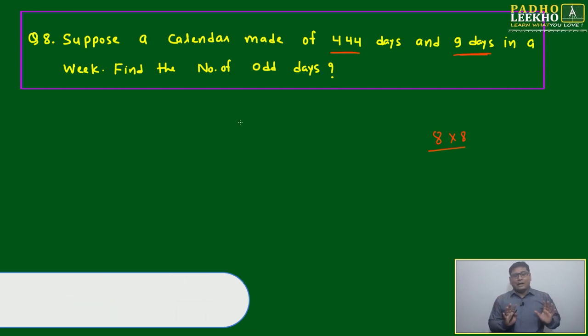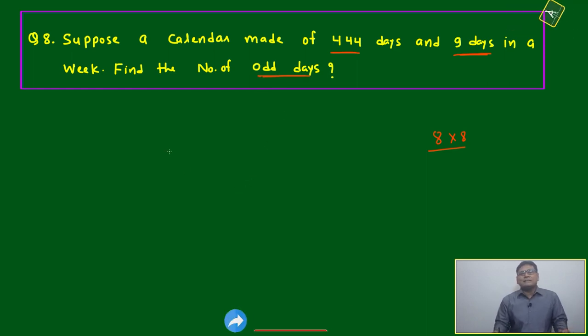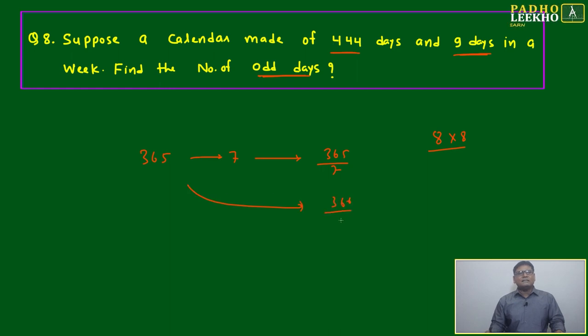Number of odd days will be very simple - just a division by how many days fall in the week. For 365 days with seven days in a week, we do 365 divided by 7. If it's a leap year, 366 divided by 7.